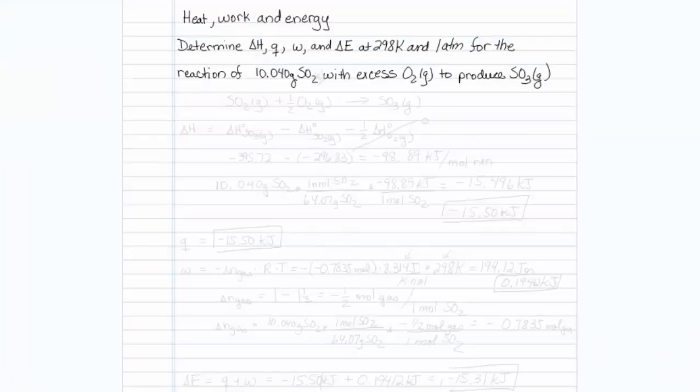This is how to get heat, work, and energy for a reaction. Determine delta H, Q, W, and delta E at 298 K and 1 atm for the reaction of 10.040 grams sulfur dioxide with excess oxygen to produce sulfur trioxide.